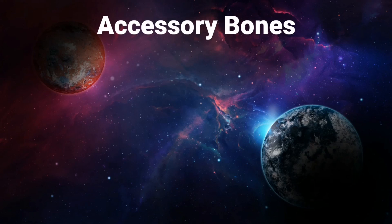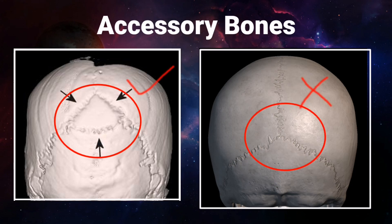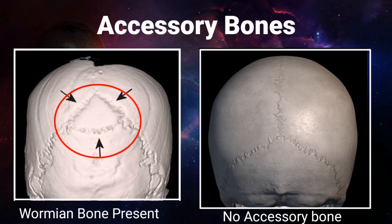Sesamoid bones are very important for normal locomotion of the human body. Accessory bones, also called supernumerary bones, are present in extra quantity in the human body. They are not always present and may occur as ununited epiphyses developed from extra centers of ossification.